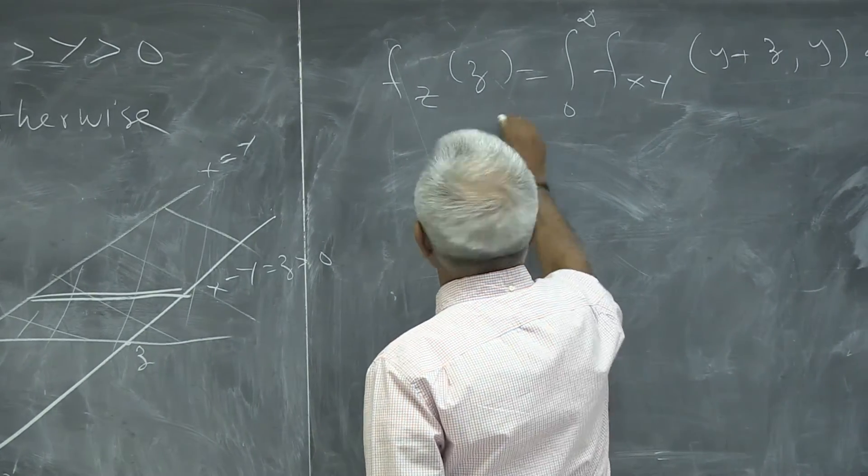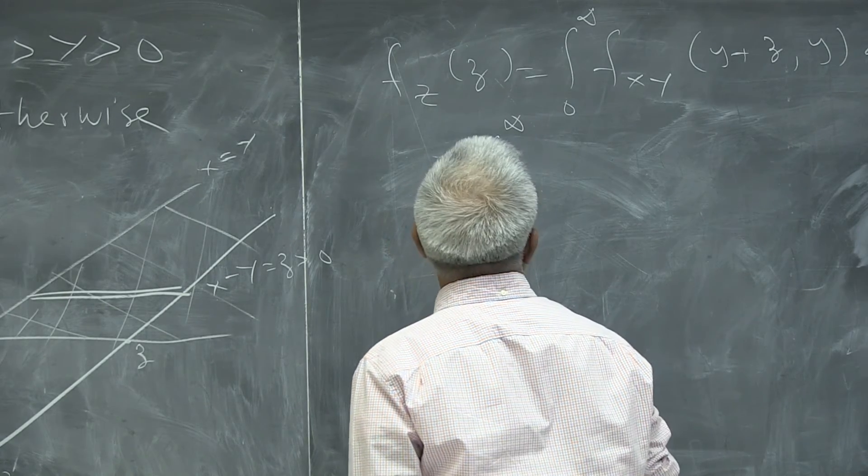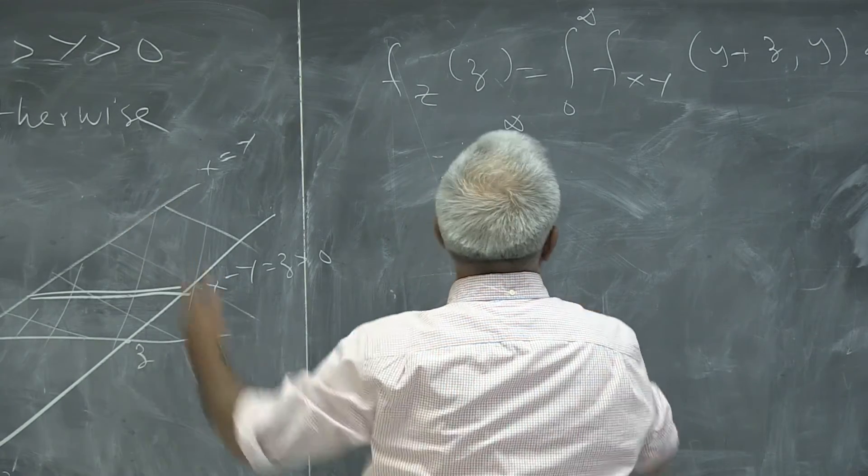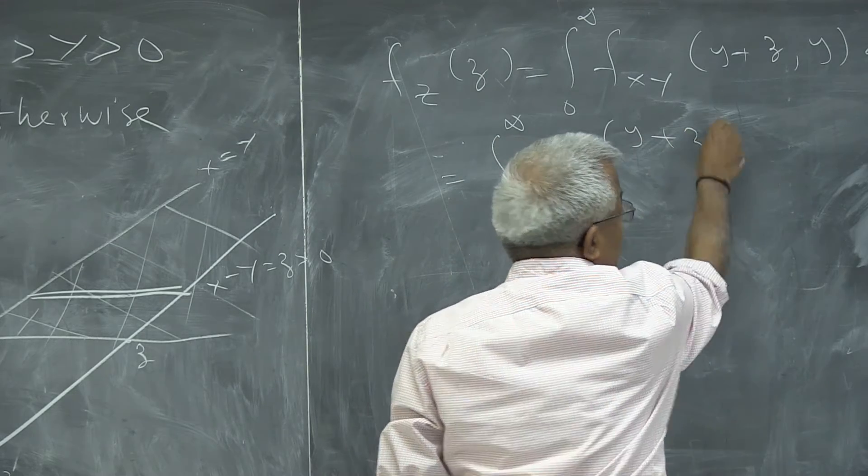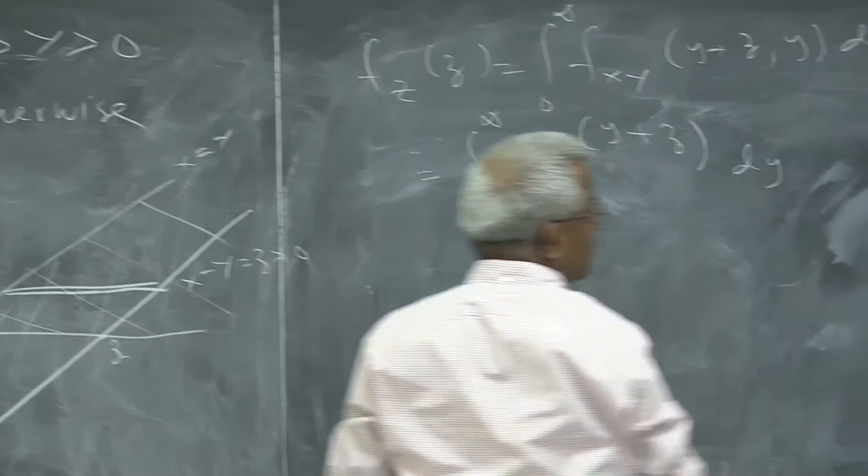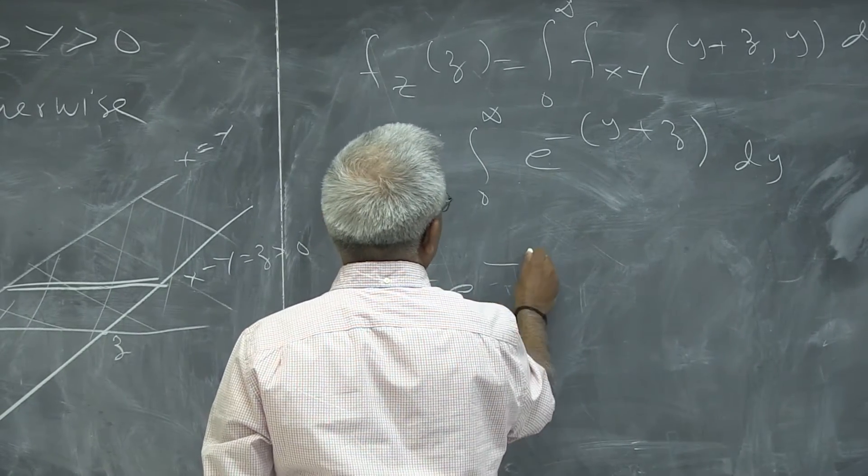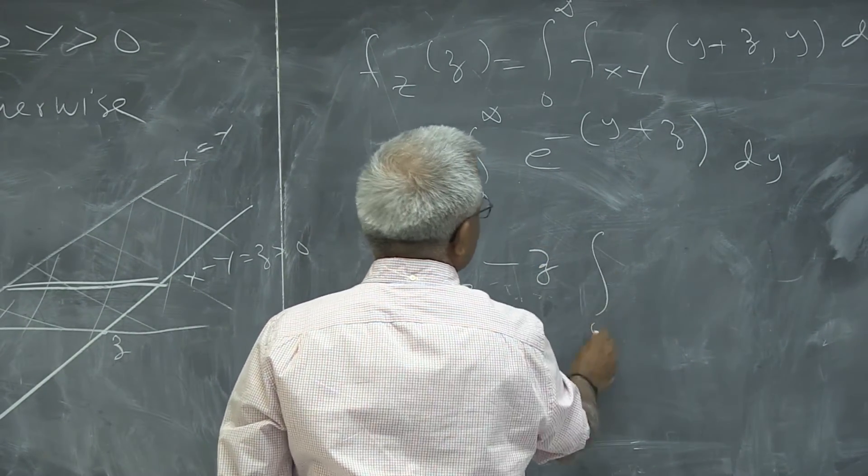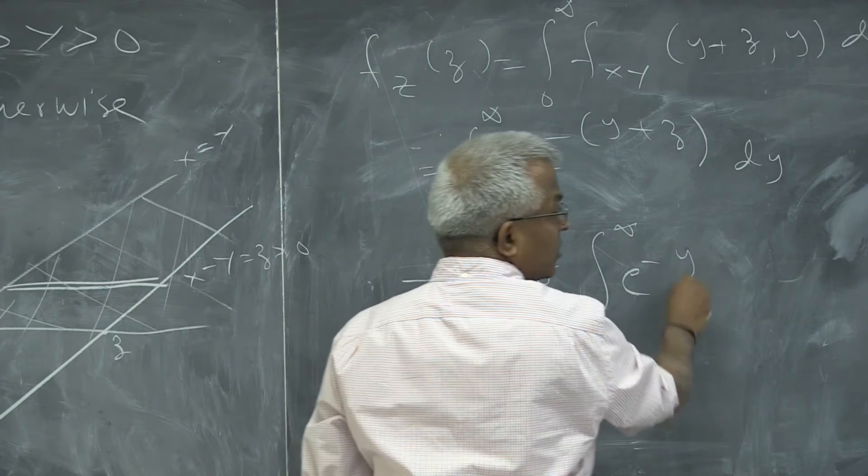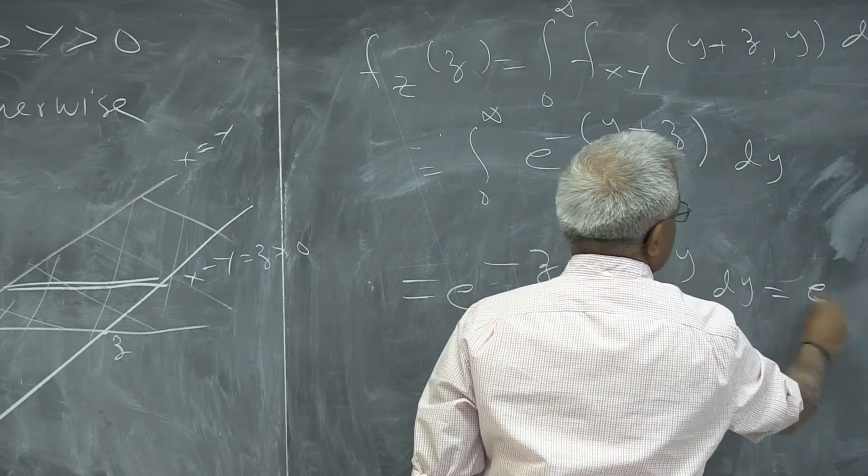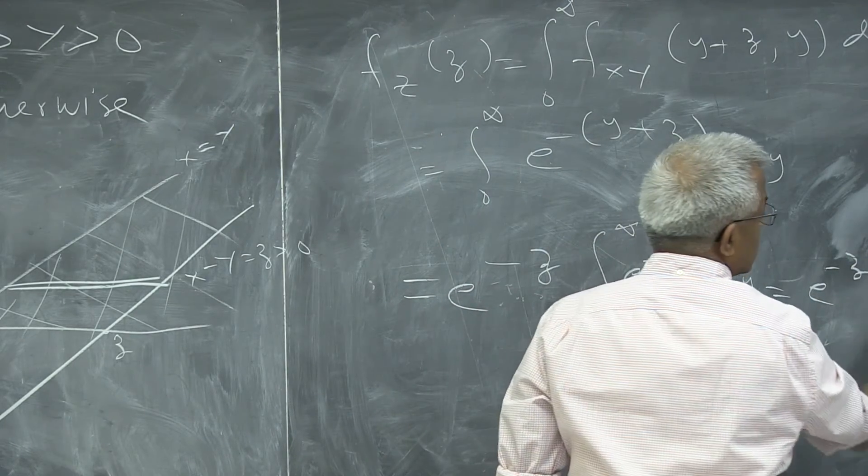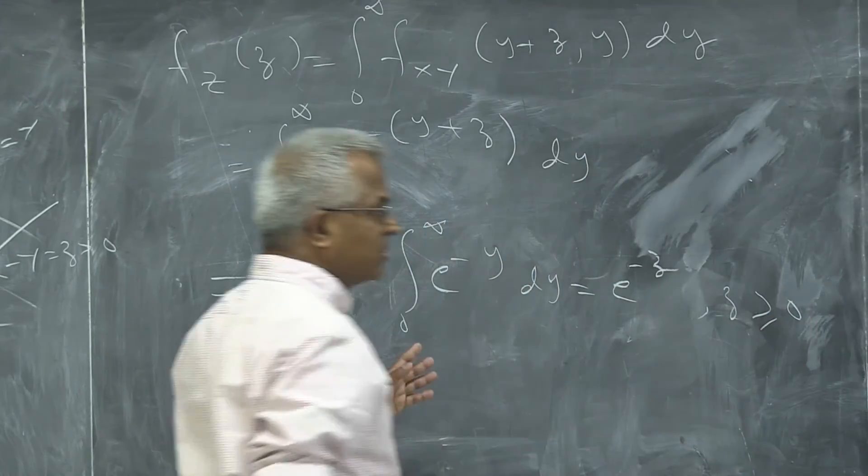This is going to be integral 0 to infinity. And the joint density function is given to be e raised to minus y plus z. But you are right, the limits should be different. But let's do this. This is going to be e raised to minus z, 0 to infinity e raised to minus y dy. e raised to minus z for z positive. That is exponential, right?